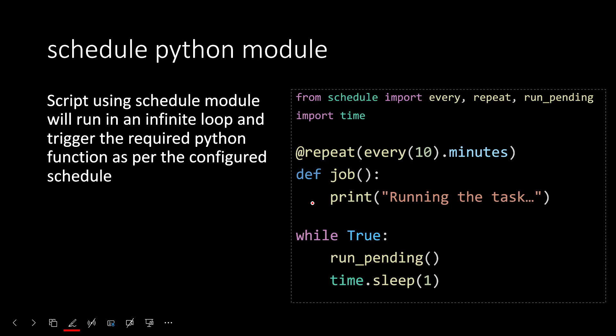A simple example would be something like you have a Python function and you want to run it periodically. Generally, what you would do is create a Python script and schedule that in a task scheduler or a cron job. But if you don't want to use those, you can annotate the Python function and use a while loop to infinitely run the script and trigger this function as per the required periodicity.